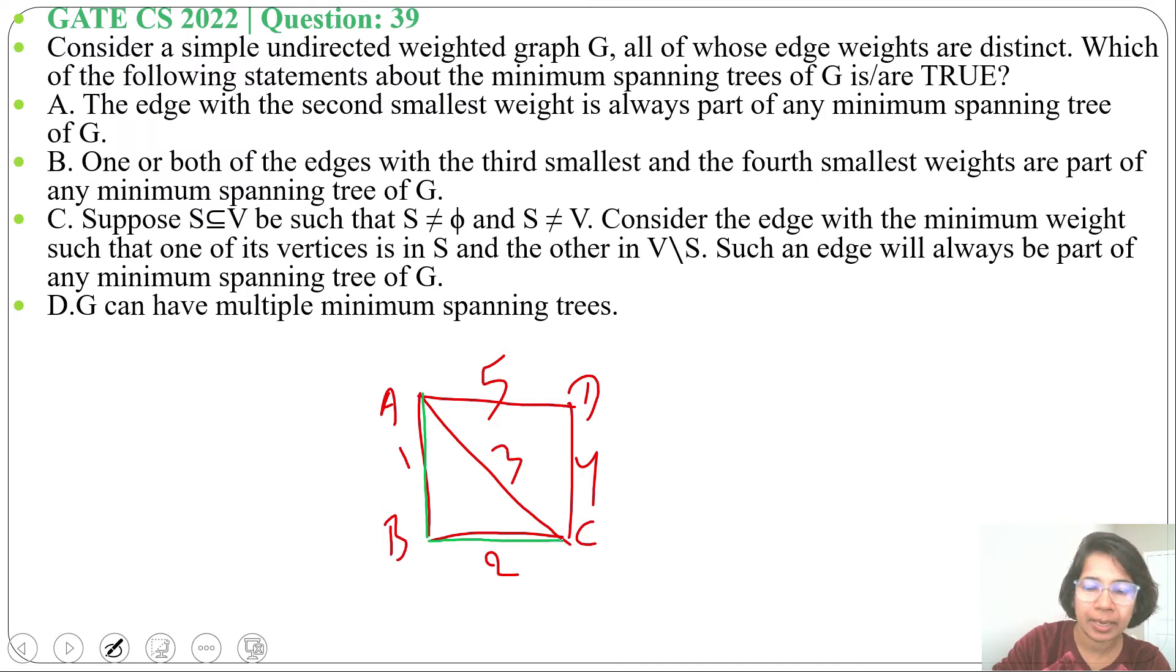Next we cannot choose 3 as it is creating a cycle, so we'll choose CD as weight is 4. By Kruskal algorithm we'll choose the edges according to its increasing weight. And by two edges there will be no cycle. For cycle we need at least three edges. That's why we always include second smallest weight edge.